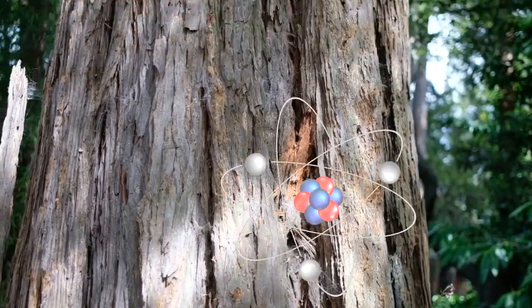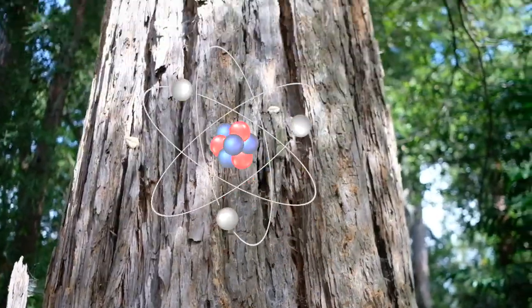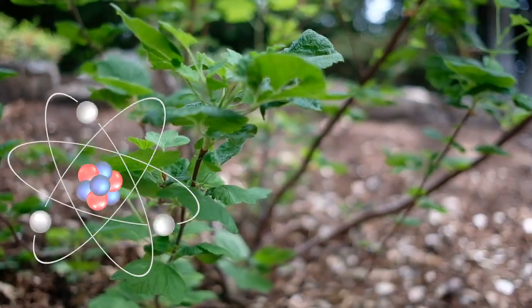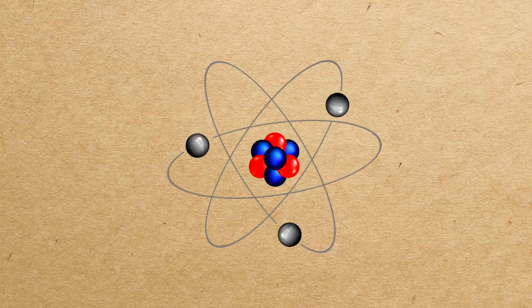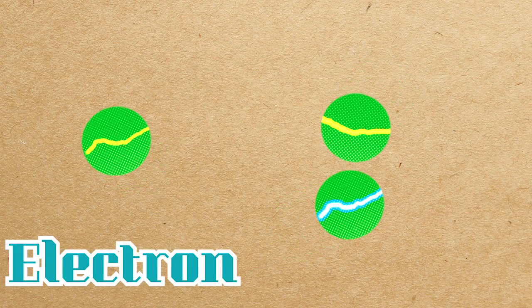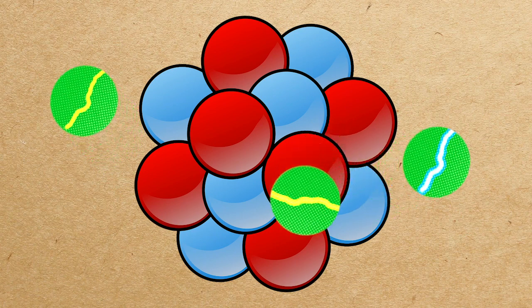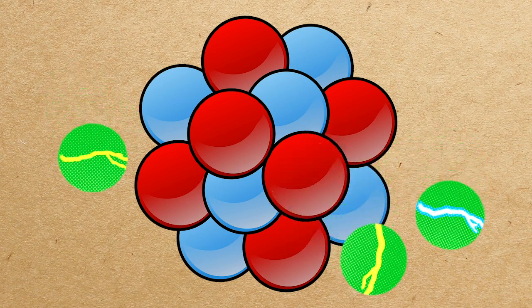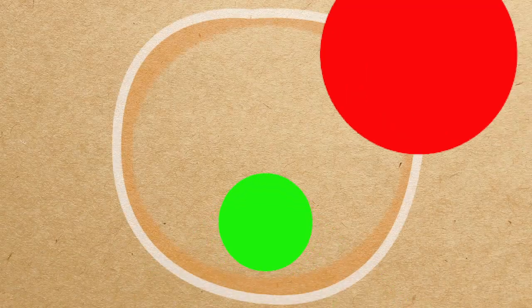You may know that everything in the universe is made out of tiny things called atoms. They make up the trees, the birds, and everything you see around you. You may even know that atoms are made of even smaller things: the neutron, the proton, and the electron. If you go even further, you'll find that these particles are made up of even smaller particles — quarks.